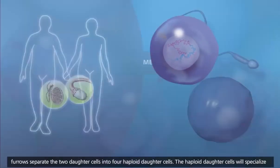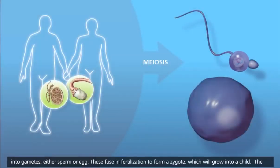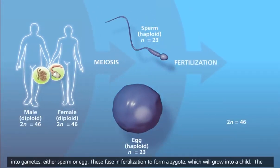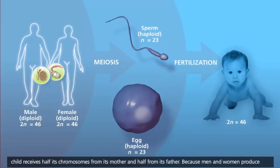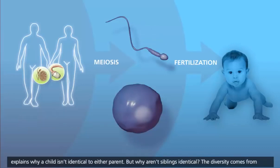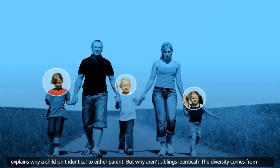Cytokinesis occurs and cleavage furrows separate the two daughter cells into four haploid daughter cells. The haploid daughter cells will specialize into gametes, either sperm or egg. These fuse in fertilization to form a zygote, which will grow into a child. The child receives half its chromosomes from its mother and half from its father. Because men and women produce millions of gametes and the selection of gametes in fertilization is random, this contributes to genetic diversity and explains why a child isn't identical to either parent. But why aren't siblings identical?